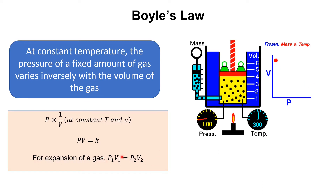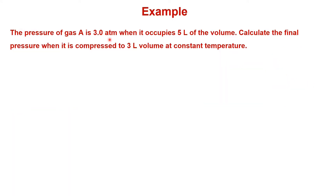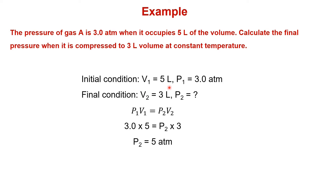Let's see an example. The pressure of gas A is 3.0 atmosphere when it occupies 5 liters of volume. Calculate the final pressure when it is compressed to 3 liters at constant temperature. Initial conditions: V1 equals 5 liters, P1 equals 3.0 atmosphere. Final condition: V2 is 3 liters, and P2 we need to calculate. Using P1V1 equals P2V2, we can calculate P2 and get 5 atmosphere. Keep in mind that units must be the same in initial and final conditions.